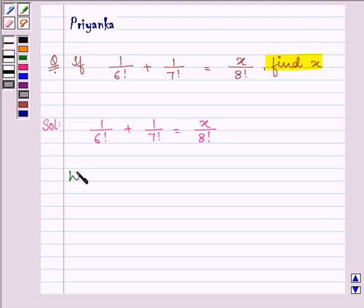We know that n factorial is equal to 1 multiplied by 2 multiplied by 3 multiplied by all the natural numbers till n.